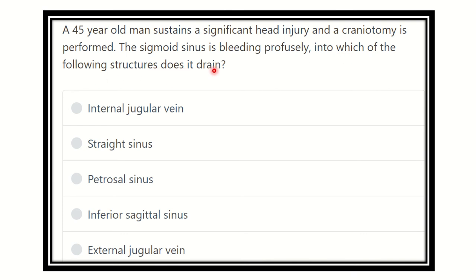After careful reading, the key points are: a 45-year-old man sustains a significant head injury, a craniectomy is performed, and the sigmoid sinus is bleeding profusely. We have to find out into which structure the sigmoid sinus drains. The options are: internal jugular vein, torcular sinus, petrosal sinus, inferior sagittal sinus, and external jugular vein.